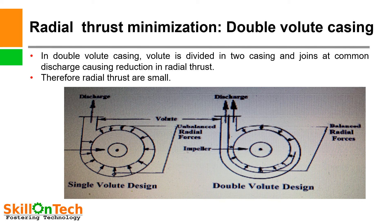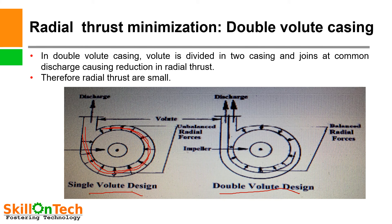Radial thrust minimization: Double volute casing. You can see a picture of a single volute design casing and a double volute design casing. In a single volute design casing, there is area variation in the discharge path, so the pressure also varies, causing production of unbalanced radial forces. These unbalanced radial forces are balanced to a certain extent by modifying the single volute design casing into a double volute design casing.